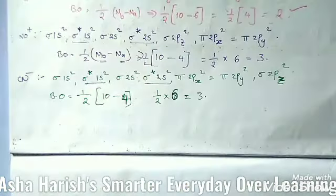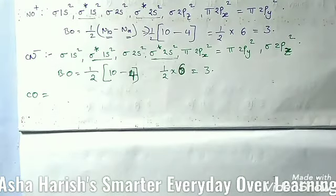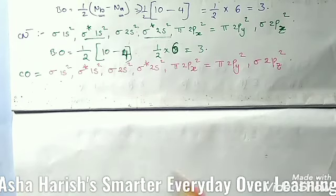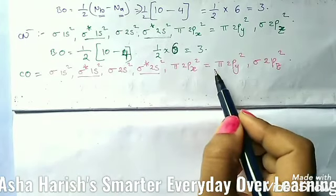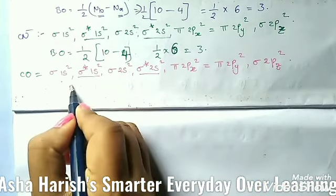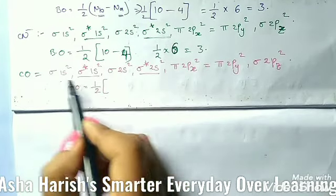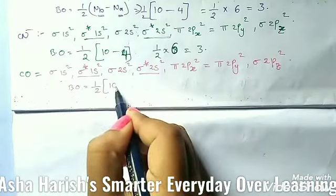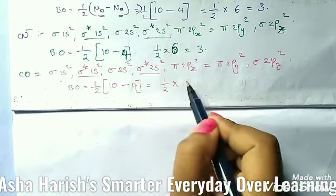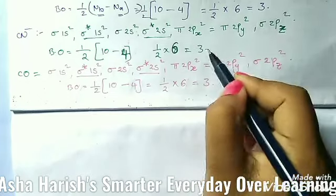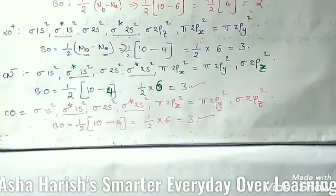For CO, the electronic configuration is: σ1s², σ*1s², σ2s², σ*2s², π2px² = π2py², σ2pz². Bonding orbitals: 2, 4, 6, 7, 8, 9, 10 — that's 10. Anti-bonding orbitals: 2, 4 — that's 4. Bond order = (10 - 4)/2 = 3. CO also has bond order 3. Now let's check option C — N2 and O2⁻.